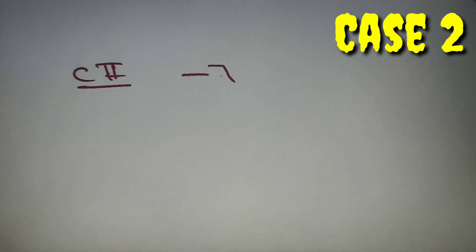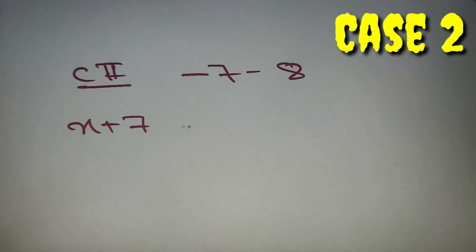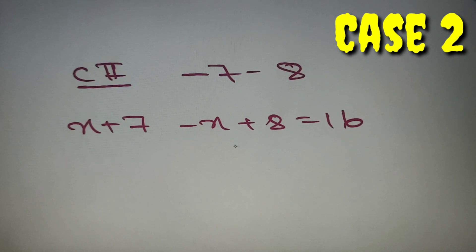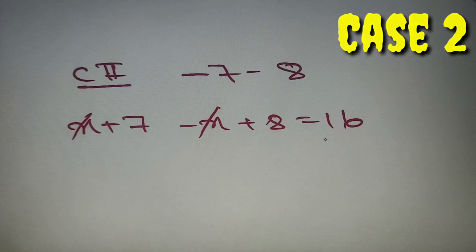For case 2, we take x from -7 to 8. In this range, the first modulus is positive but the second is negative. So we get x + 7 - (x - 8) = 16, which simplifies to x + 7 - x + 8 = 16. Both x terms cancel out, so this case has no solution.